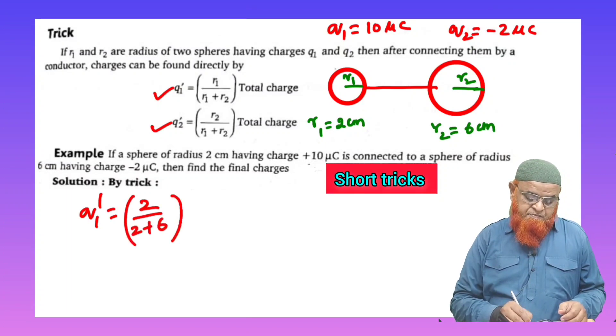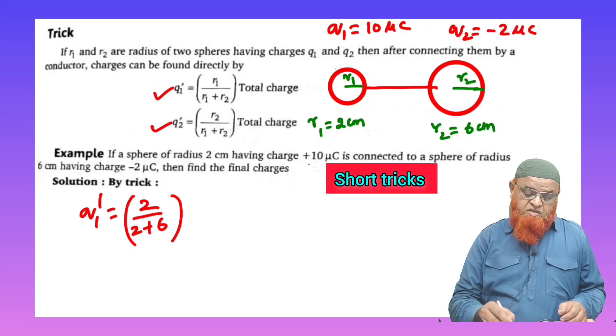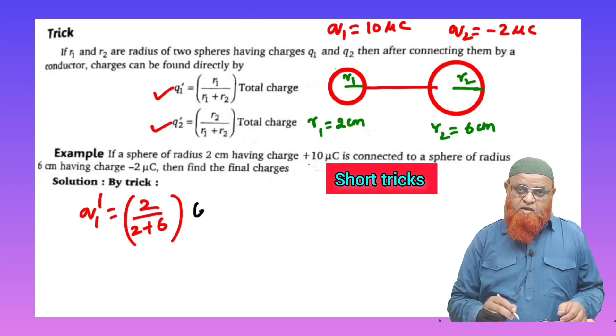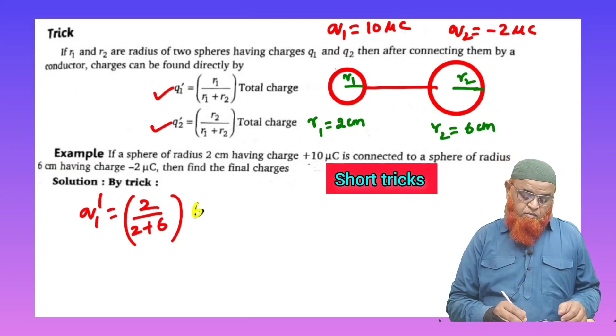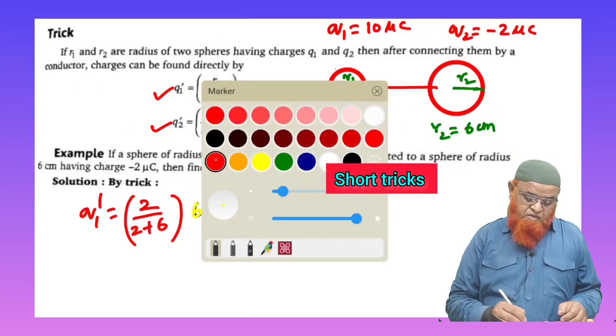And this is 2 plus 6 into total charge. Total charge means 10 microcoulombs minus 2 microcoulombs is going to become 6 microcoulombs. It is going to become 6 microcoulombs.